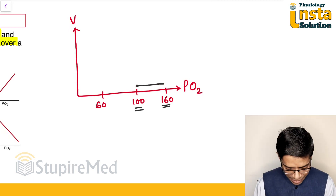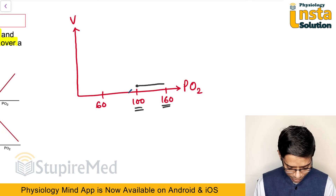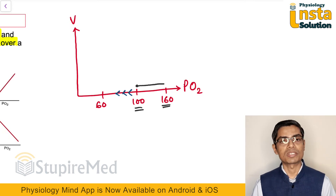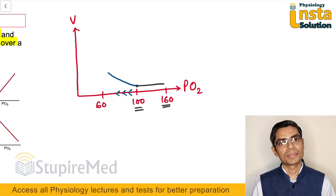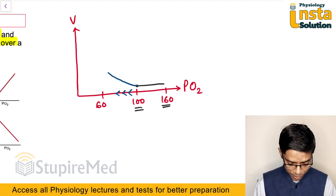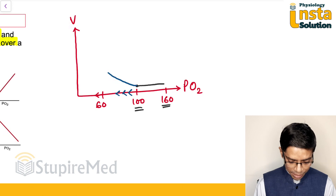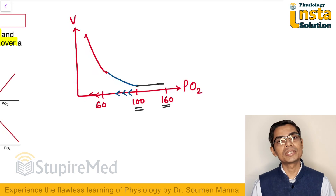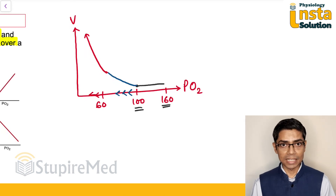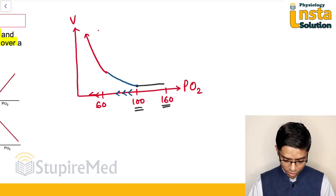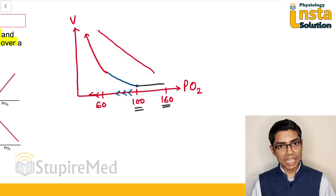If I decrease the oxygen tension further, I am going to see that ventilation rises, but in a slow manner. But whenever the partial pressure of oxygen is below 60 mmHg, it suddenly rises in a steeper pattern. That means the relationship between hypoxia and rise in ventilation is not linear — it follows a curve pattern.